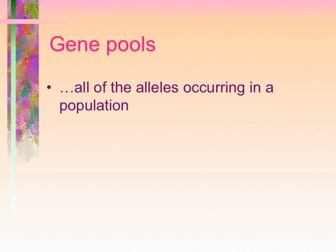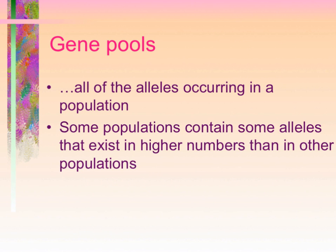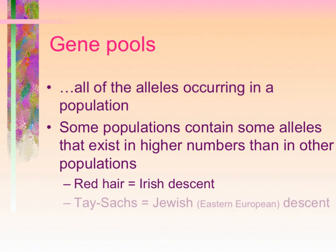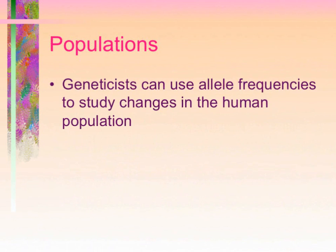A gene pool is all of the alleles occurring in a population. Some populations contain alleles that exist in higher numbers than in other populations. For example, the allele that codes for red hair may signify Irish descent, and Tay-Sachs, a neurological condition, is more predominant in Jewish people of Eastern European descent. Geneticists can use allele frequencies to study changes in the human population.